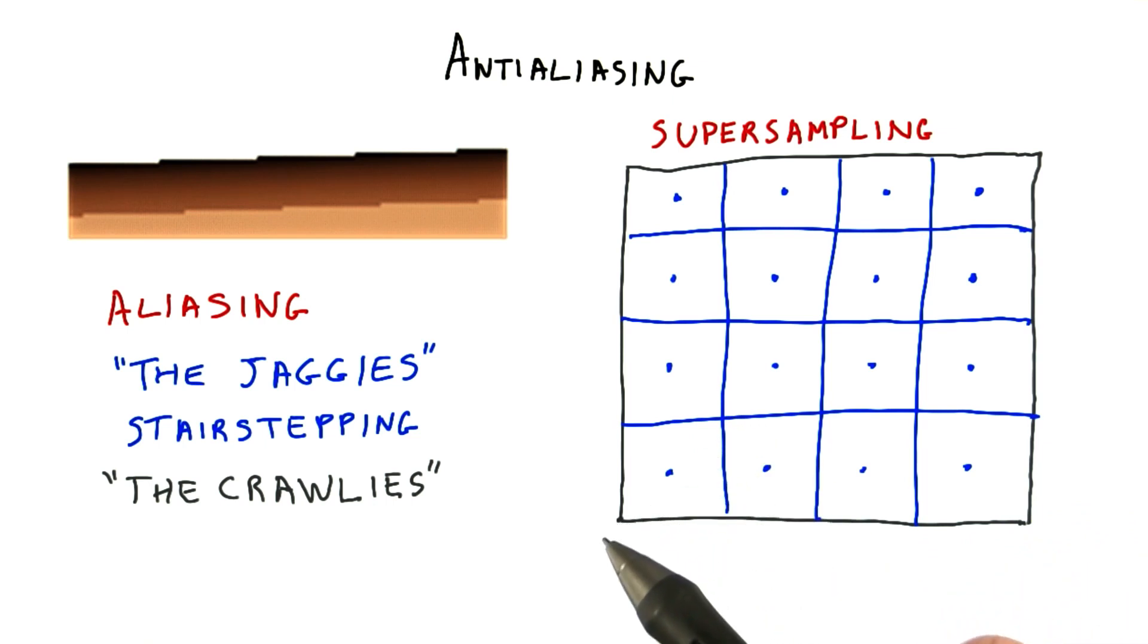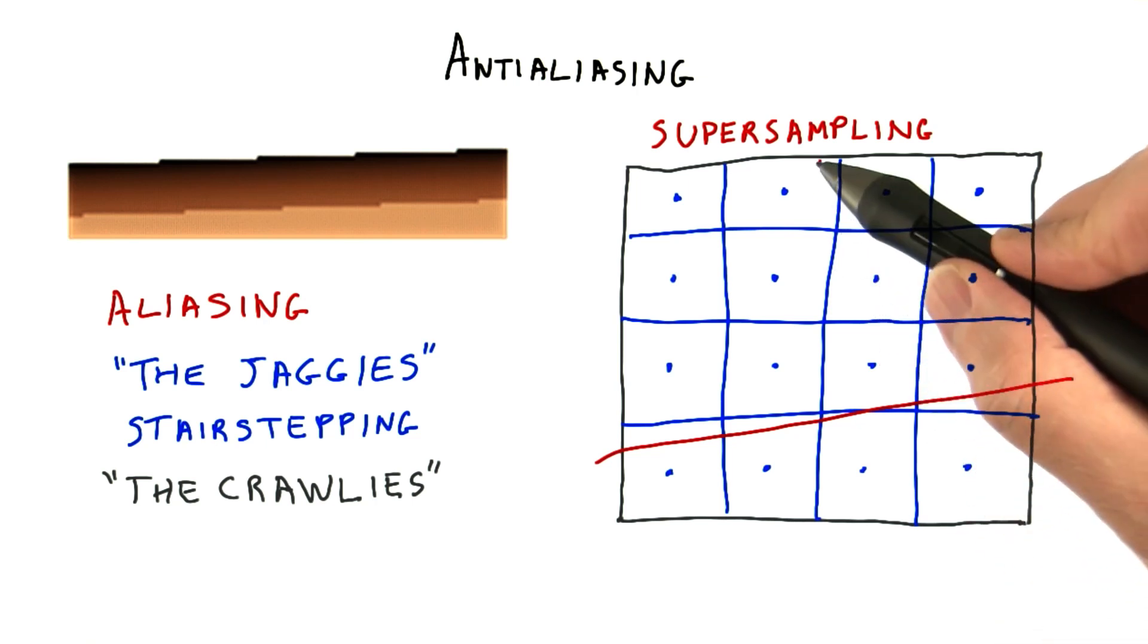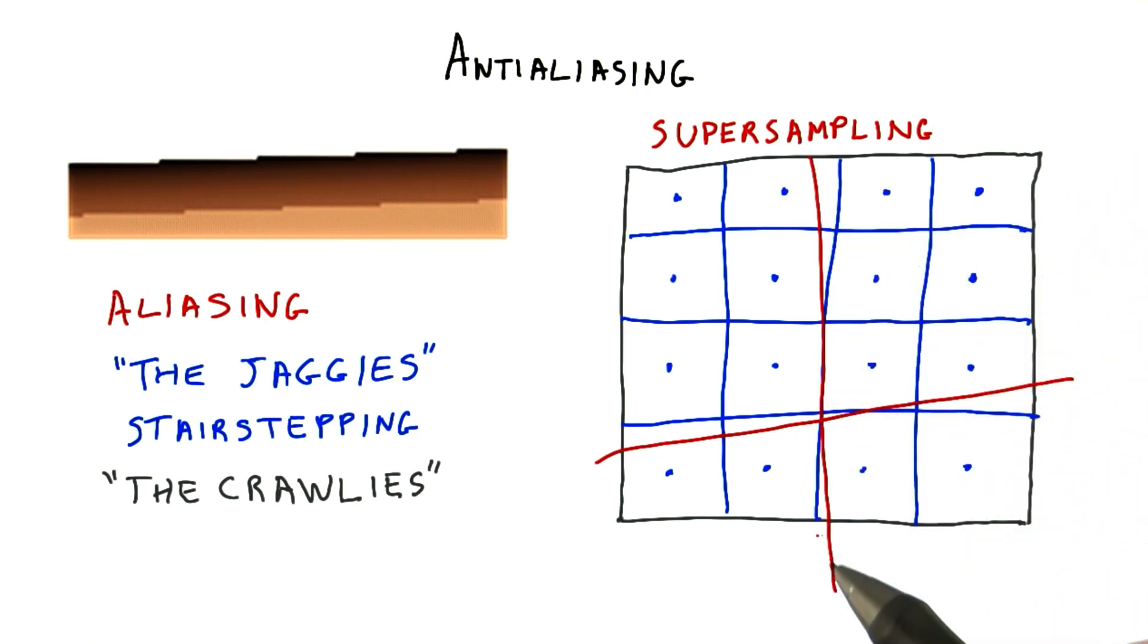This scheme is considered a bad idea, for a number of reasons. One is that it's expensive both in memory and processing costs. Another is that sampling in a little 4 by 4 grid is not much help in fixing the jaggies for nearly horizontal or nearly vertical lines.